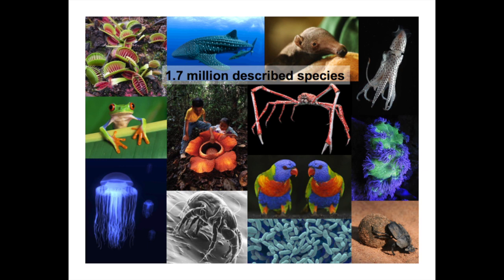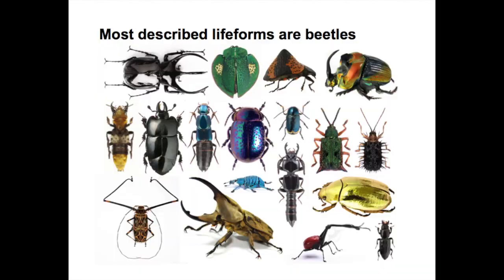There are about 1.7 million described species of organisms — organisms that people have found, collected, named, described, and put into museums. This represents, depending who you ask, maybe between 10% and 50% of the total number of organisms on Earth. Most organisms — one in every four living things, about 400,000 species — are beetles, which are my favourite group of organisms.